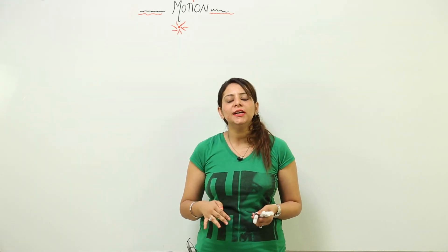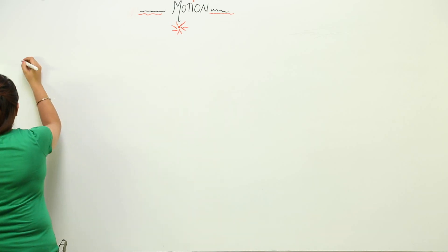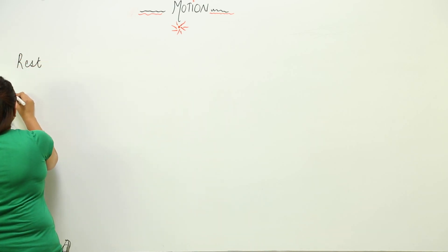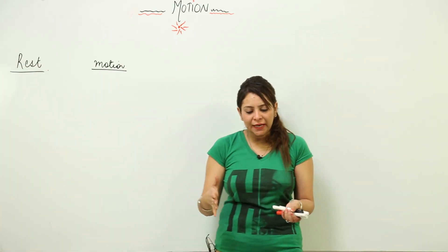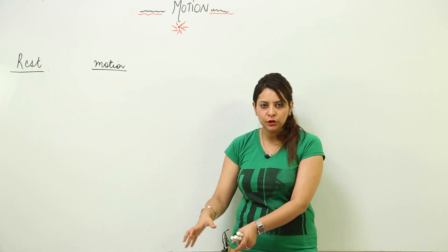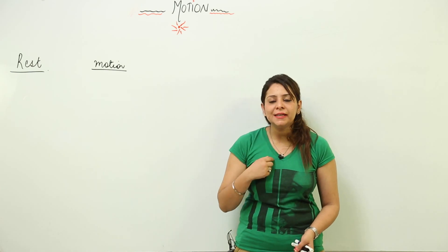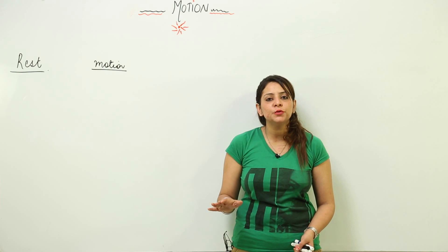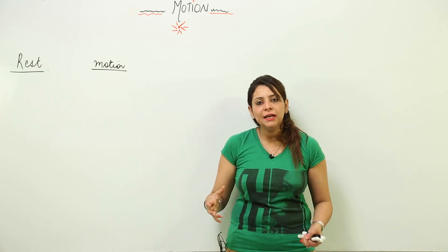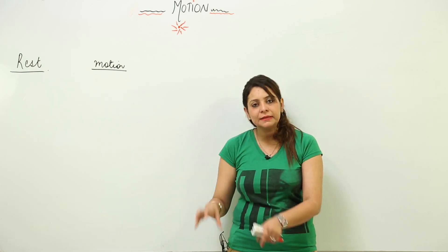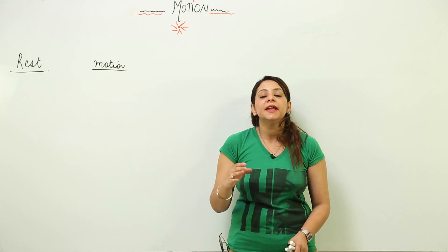We are going to start with a new unit: motion. First, you should know what motion actually is. We have two terms — one is rest and the other is motion. Suppose I have a book lying on the table. After some time, when I look at the book, it remains at the same position. It doesn't change its position with respect to the surroundings, so that book is actually at rest.